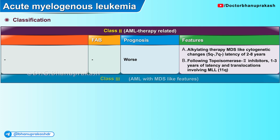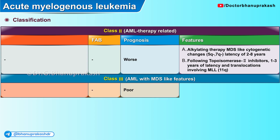The third class as per the WHO classification is acute myelogenous leukemia with myelodysplastic syndrome-like features, which usually tends to have poor prognosis with dysplastic features and cytogenetic changes of myelodysplastic syndrome.